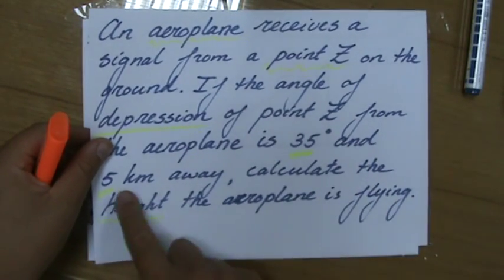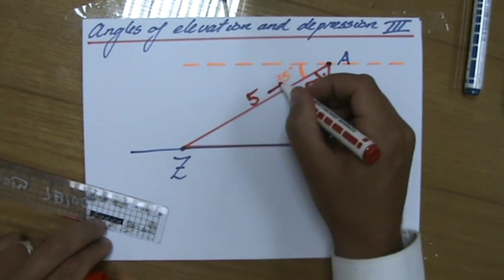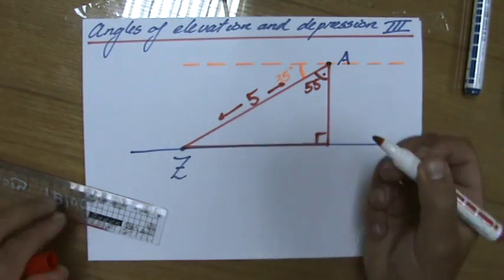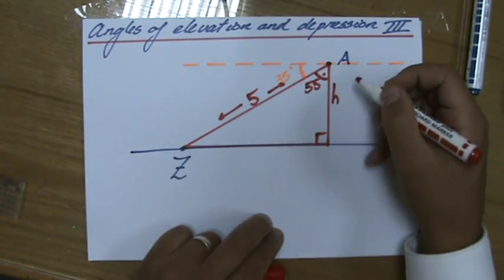And they're 5 kilometers away. So the distance of the hypotenuse is 5 kilometers. What is the height of the airplane? So that is the question.